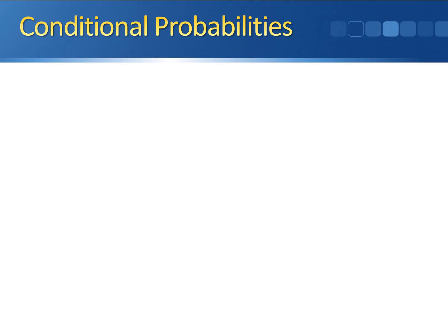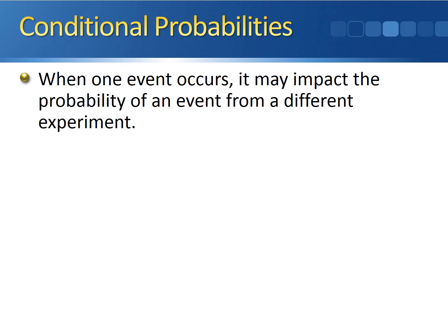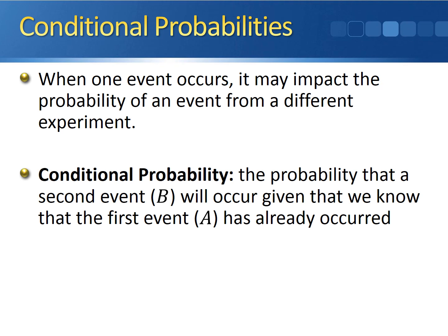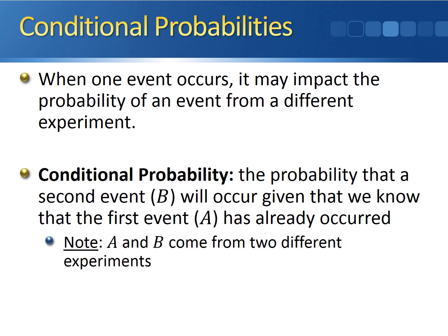The third type of probability is a conditional probability. When one event occurs in one experiment, it may actually impact the probability of an event from a different experiment — this is where conditional probabilities come into play. A conditional probability is the probability that a second event, event B, will occur, given that we know some other event, event A, has already occurred. A and B are coming from two separate experiments, just like the rolling die and flipping coin example.